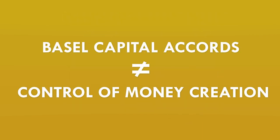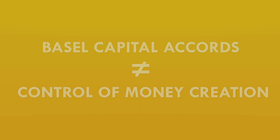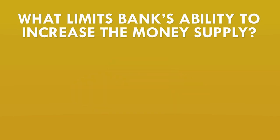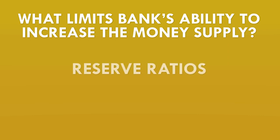The important thing is that the capital adequacy reserves are not, and never have been, intended to limit how much money the banks can create, or how much reckless lending they can do. It's simply about trying to ensure that when things do go wrong and loans start going bad, the banks have enough of a buffer to avoid going bankrupt. So to sum up: what does actually limit the ability of banks to increase the money supply? We've seen that the type of reserve ratio discussed in the textbooks has never even existed in the UK.